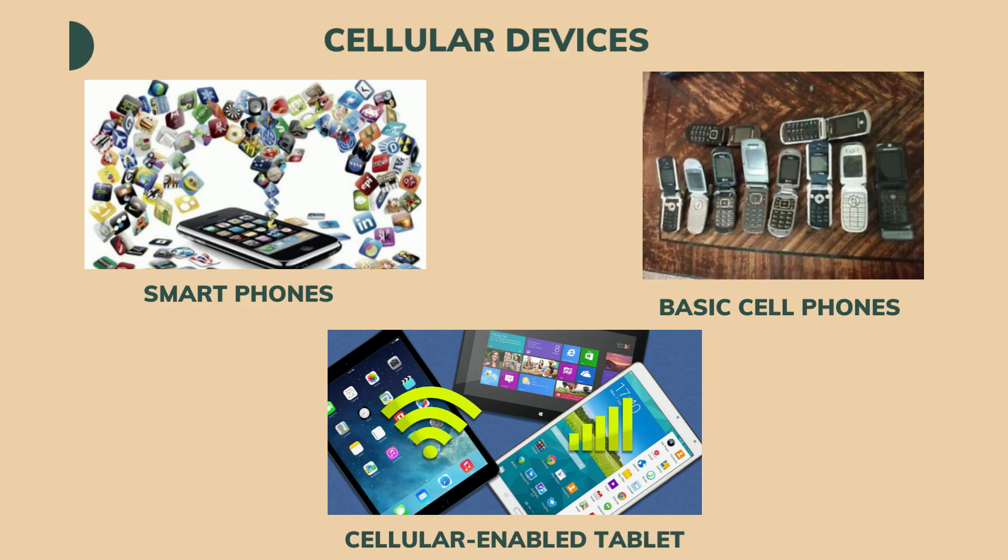Cellular devices connect to your carrier's cellular network. Each device must be recognized by the carrier network, either through a SIM card or an ESN number programmed into the device. Devices include smartphones, basic cell phones, and cellular-enabled tablets. Smartphones are used for work, communication, storing contacts and insurance cards, entertainment, and social activities like taking pictures and videos.